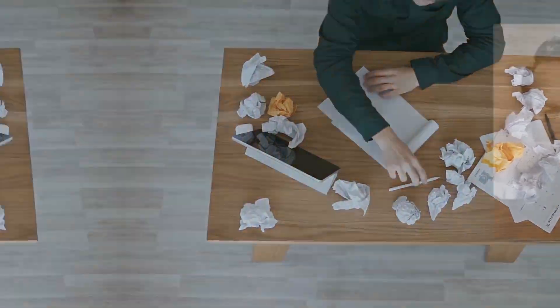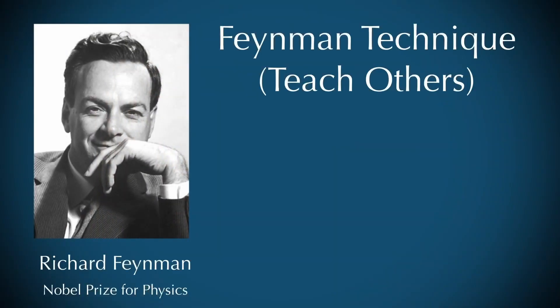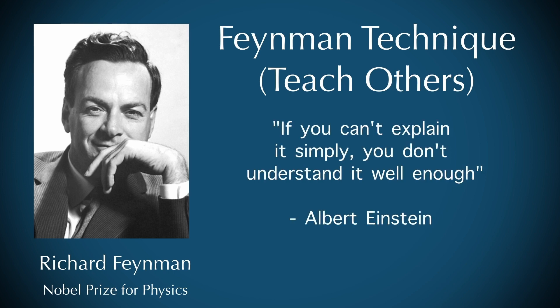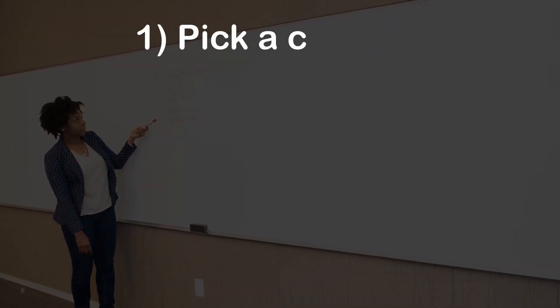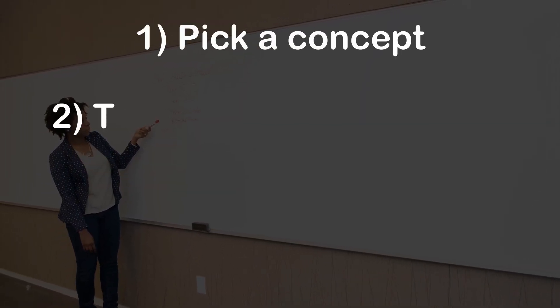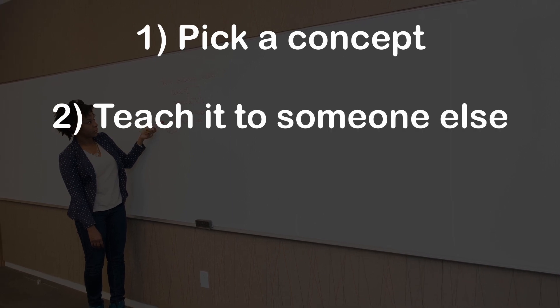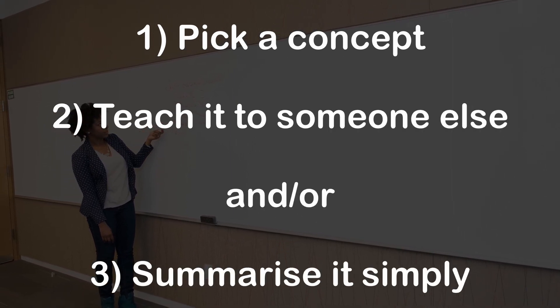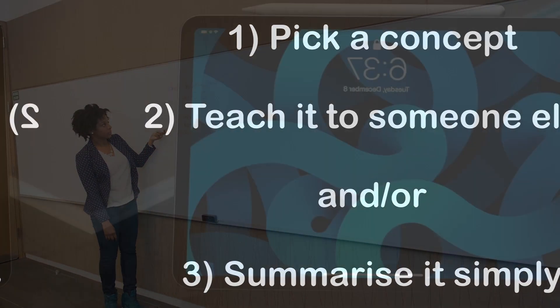To combat this and to round out your learning, I recommend something called the Feynman Technique, which is based on the premise that if you can't explain it simply, you don't understand it. One way to approach this is to pick a concept that you've learnt and act as if you were the teacher teaching this subject, or practice writing it down in the simplest form possible.